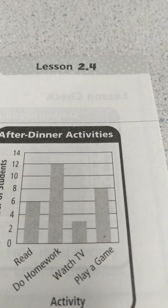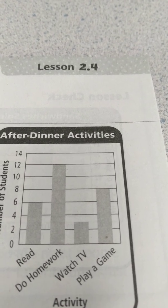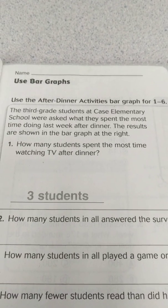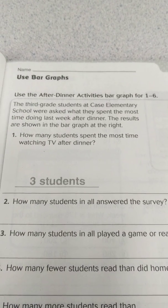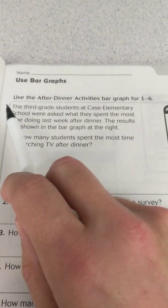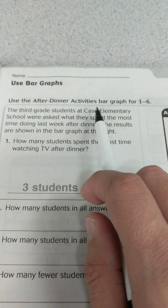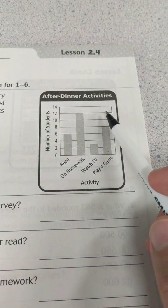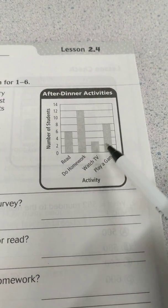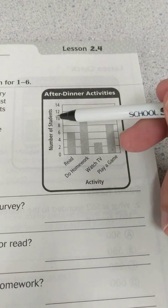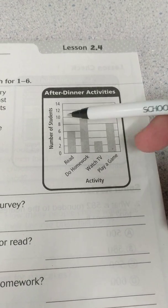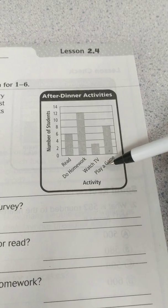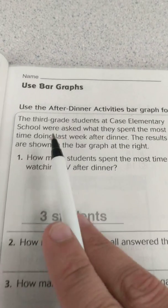This is 3rd Grade Go Math Lesson 2.4, and today we will use bar graphs. At the very top it says, use the after dinner activities bar graph for 1 through 6. As we see here, this shows the number of students on the side, and it shows the activities that they did after dinner.